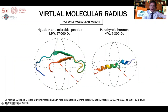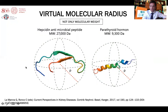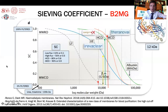For example, hepcidin has 27 kilodaltons and PTH has 9 kilodaltons. However, due to the folding of the hepcidin protein, they have almost the same virtual molecular radius. This is also an important characteristic that will define the sieving coefficient for both of these molecules.